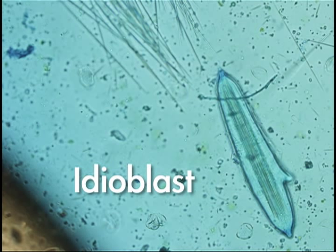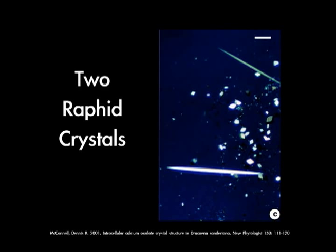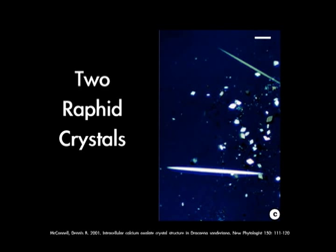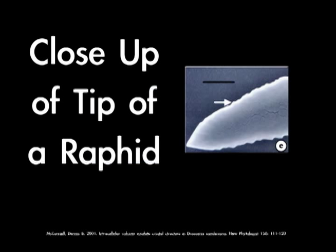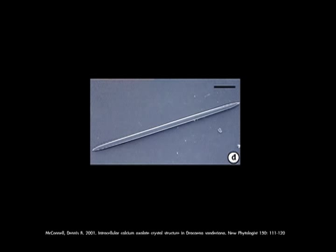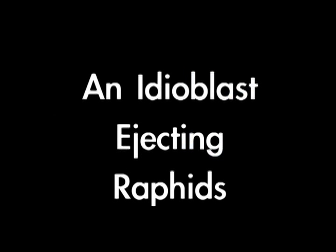It is interesting how Diffenbachia is poisonous. Its mechanism for poisoning someone is more complex than one might think. It does not simply release a toxic chemical. In addition to toxins, there are specialized cells in the plant's tissue called idioblasts that, when damaged, fire out calcium oxalate crystals called raphides. The crystals are long and spear-shaped with barbs at the end. When the raphides are ejected, they may puncture tissue, causing irritation and swelling.